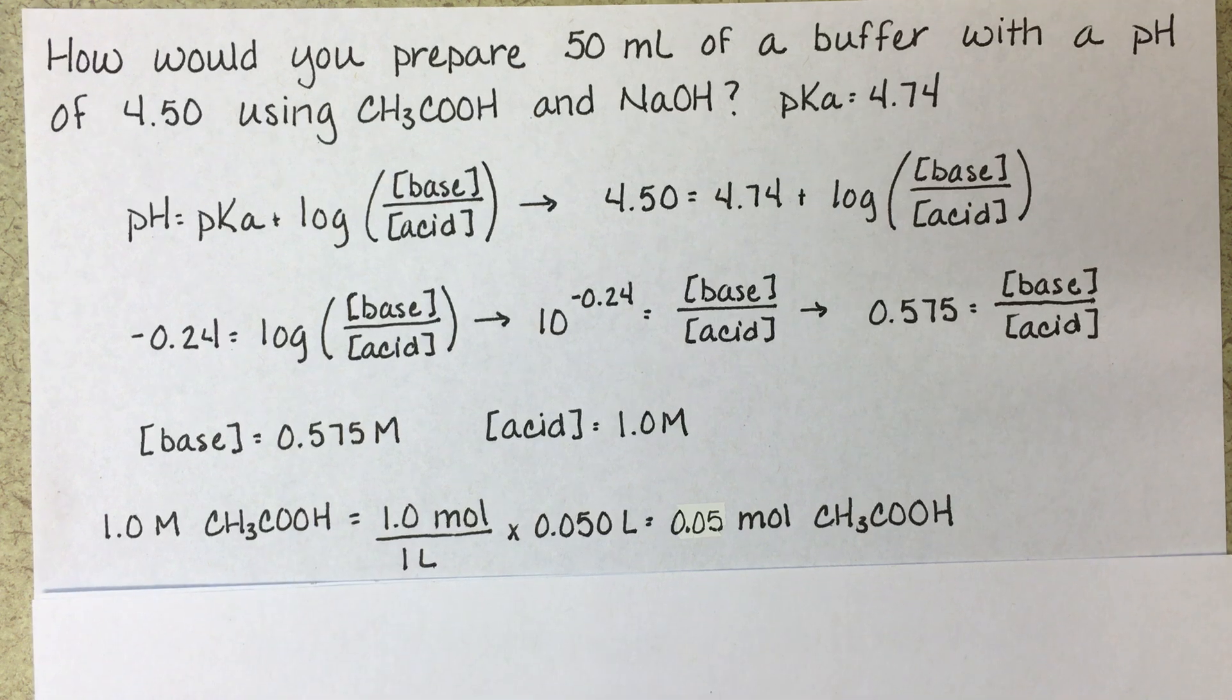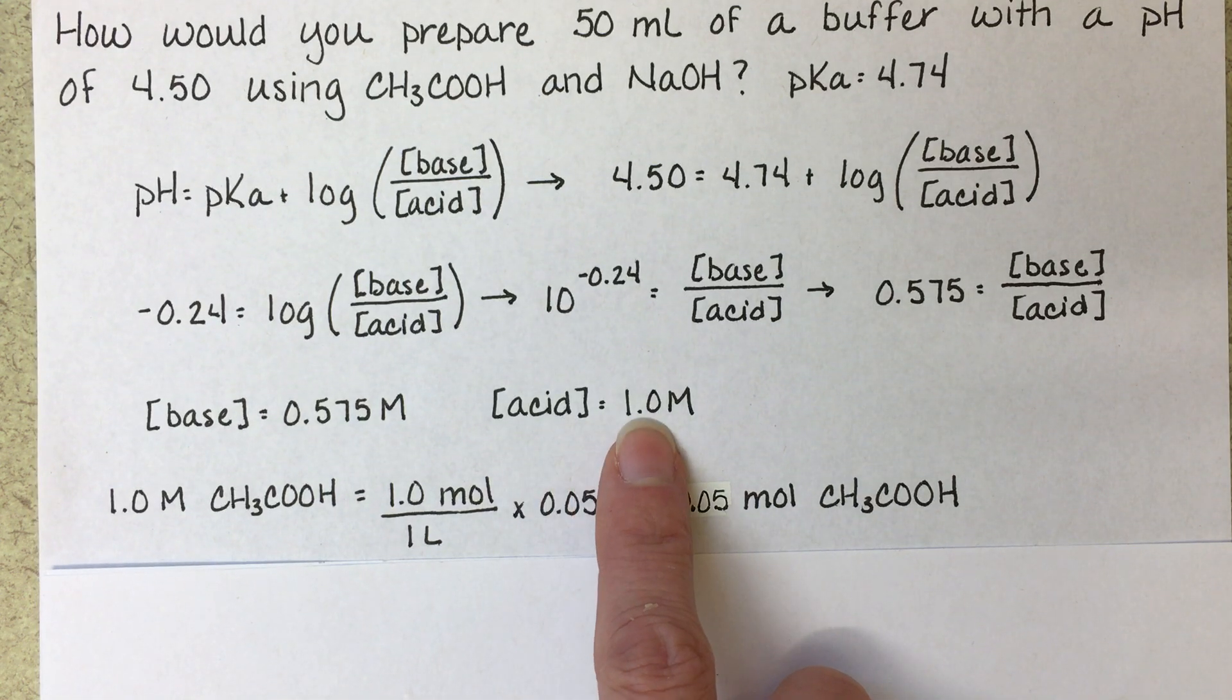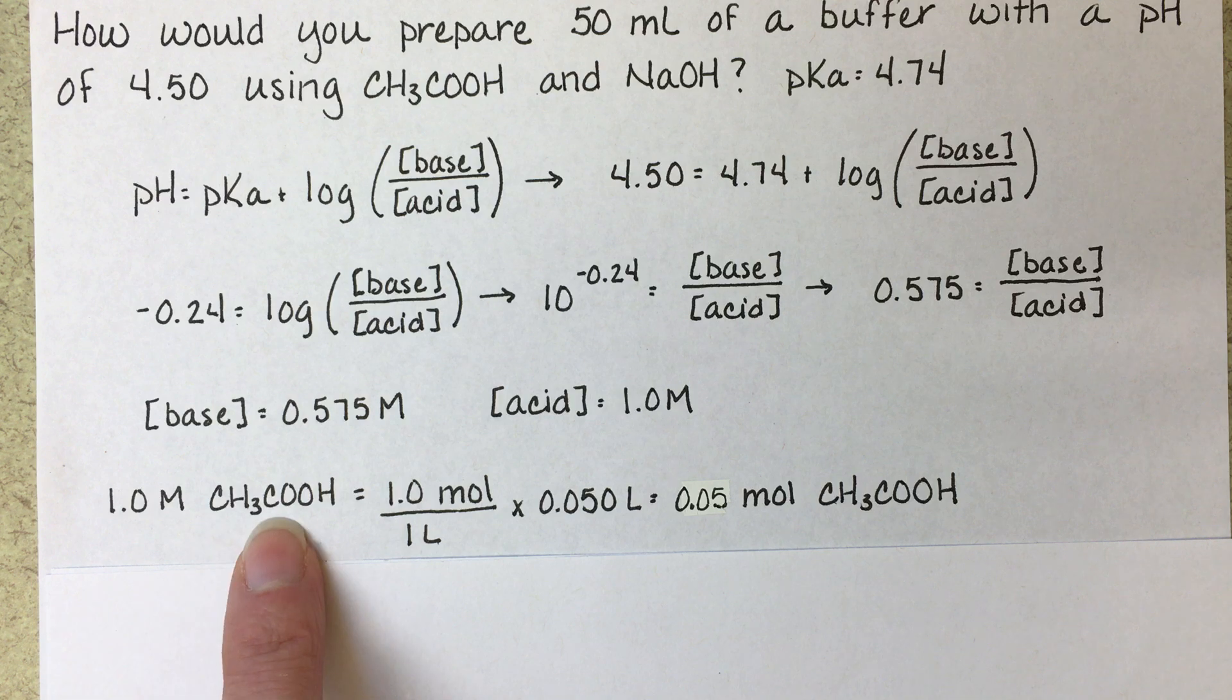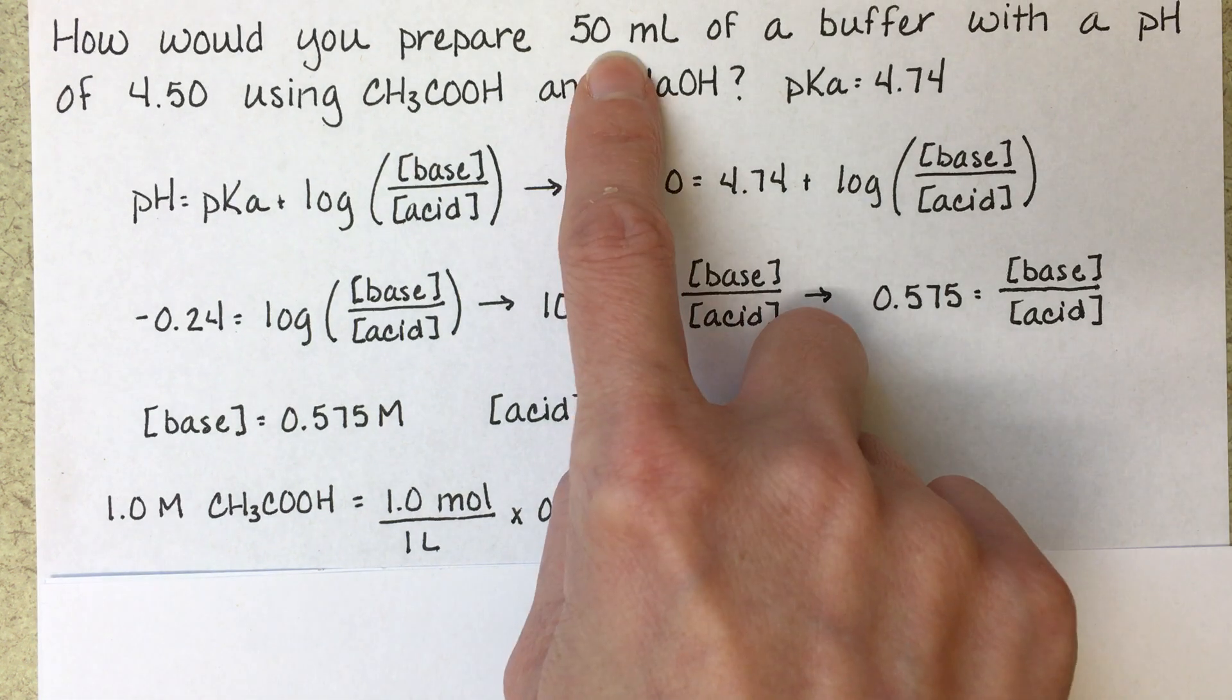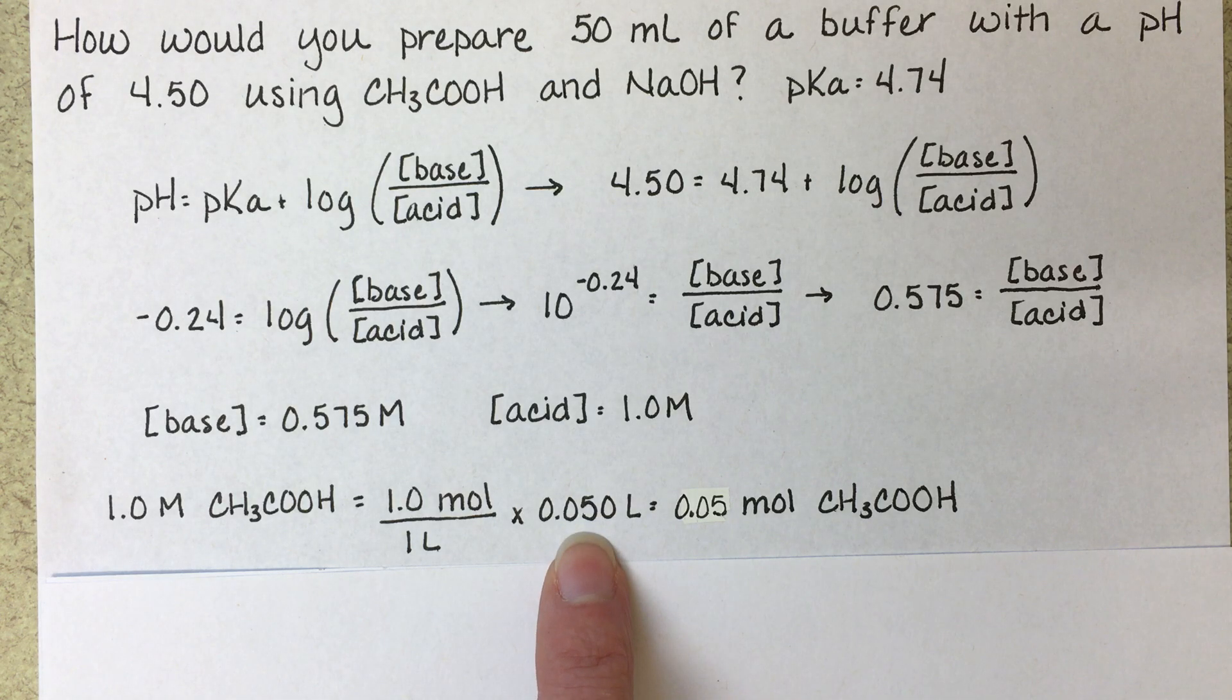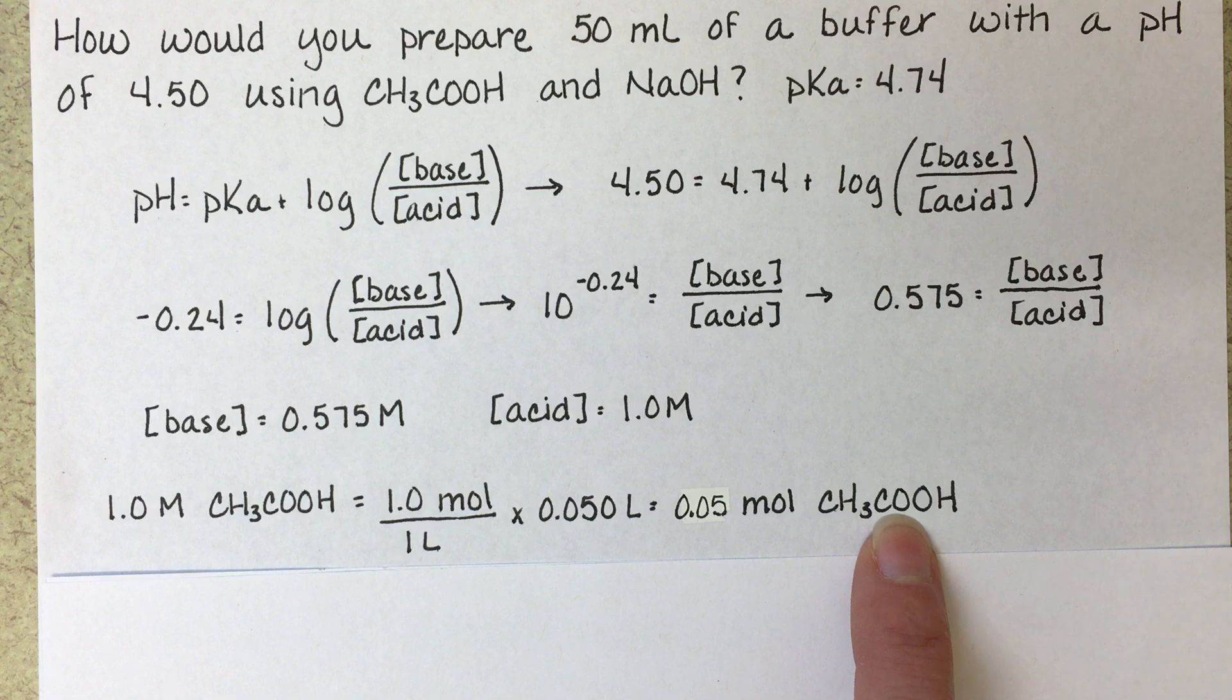For our acid, we want to have one molar acid, one molar acetic acid, which is one moles per liter. We have a desired 50 mil volume, 0.05 liters. And that tells us that we want to have 0.05 moles of acetic acid in our buffer.